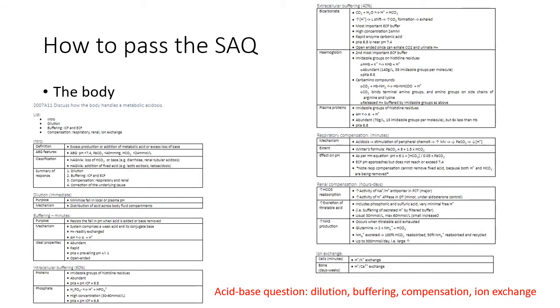Questions about acid-base homeostasis are best answered in terms of the components of the body's response to an acid-base disturbance. That is, dilution, buffering, respiratory and or renal compensation, ion exchange, and the correction of the underlying cause.